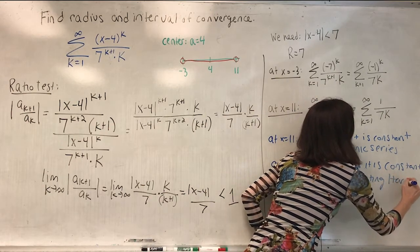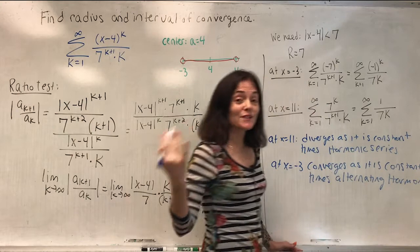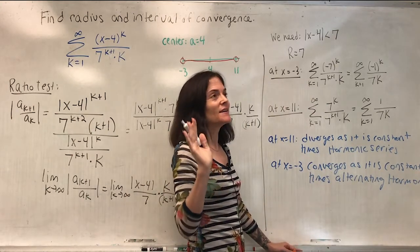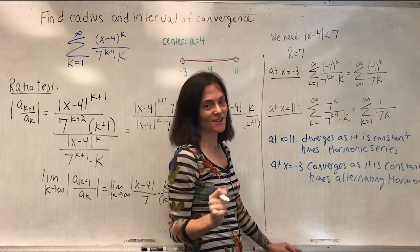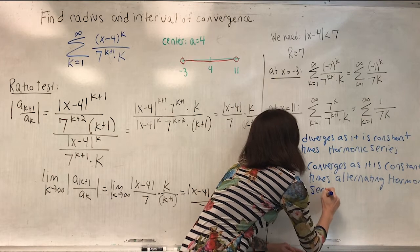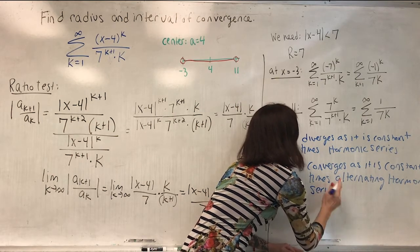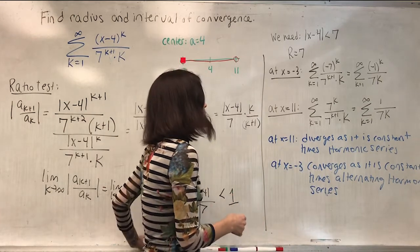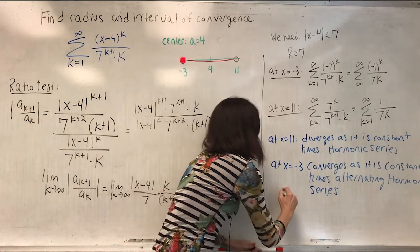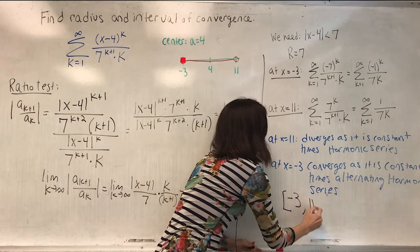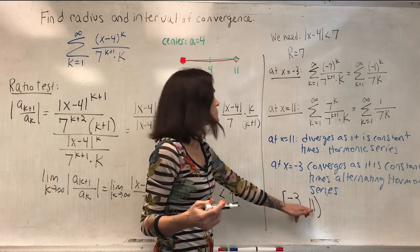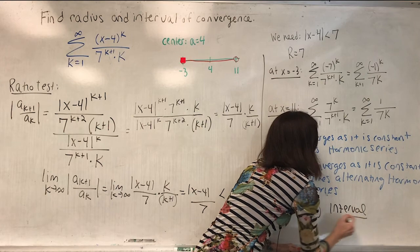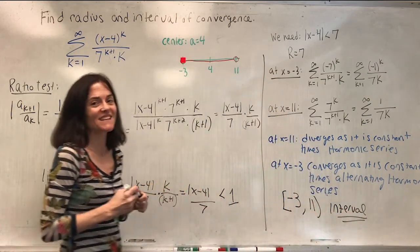We covered the alternating harmonic series in class; it can also be verified using the alternating series test. So the series converges at x = −3 and diverges at x = 11. We include −3 but do not include 11. The interval of convergence for this power series is [−3, 11).